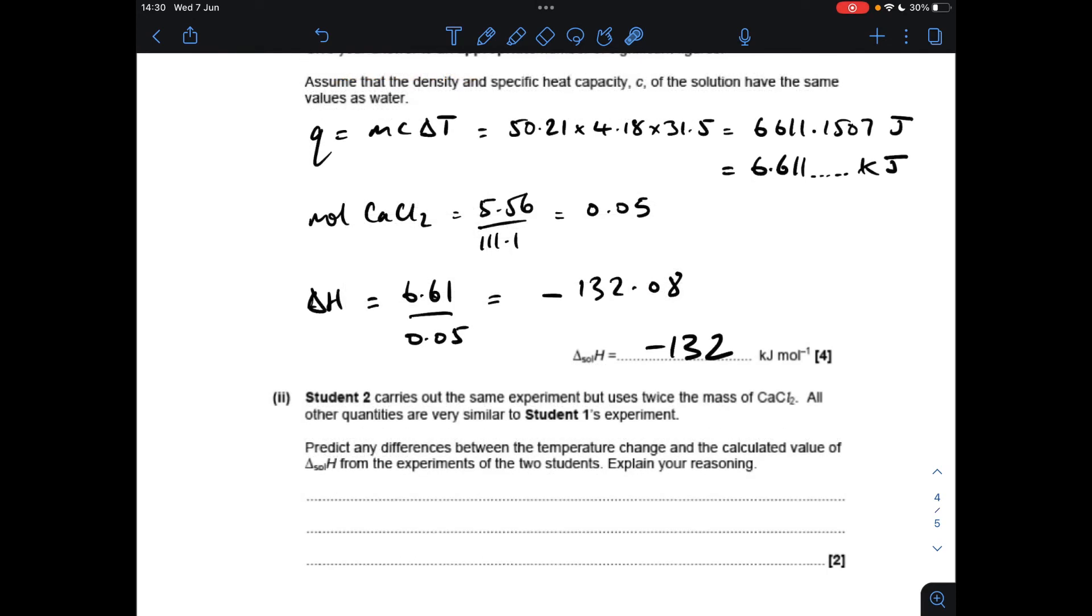And the final part of the question, potentially tricky to get your head around this bit. So student two's done the same experiment but they've used twice the mass of calcium chloride, but everything else is the same or similar to student one's. So we've got to comment on the temperature change - would it be the same or different as the first student, and also the enthalpy change of solution.